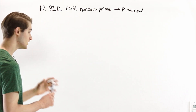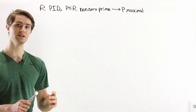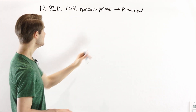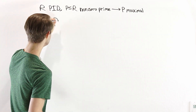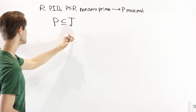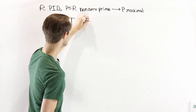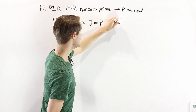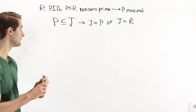Let's take a look at what the definition of a maximal ideal is. To say that P is maximal is to say that if we have some ideal J which contains P, then either J is equal to P or J is equal to the entire ring R.